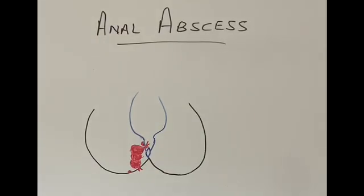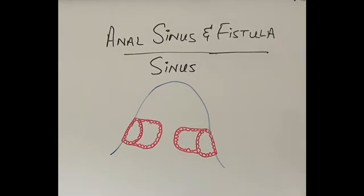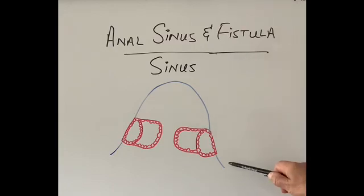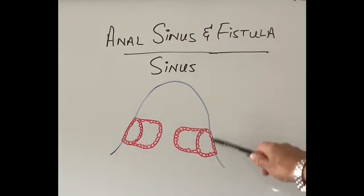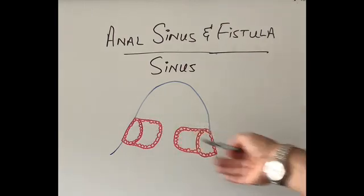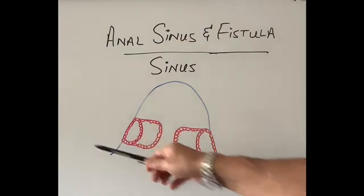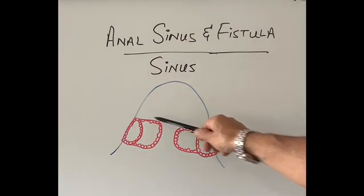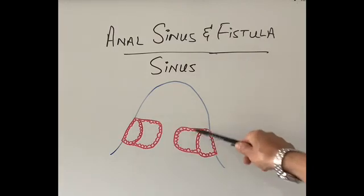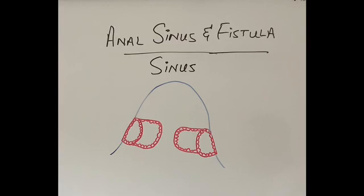This brings us to the second topic: the anal sinus, and the third: the anal fistula. Before discussing them, let's explain what a sinus means and how it differs from a fistula. I've drawn a little hill like a mountain, and I'm trying to dig a tunnel from one side to the other - like going through a tunnel in a train. We have a hole on one side as the entrance and one on the other as the exit. However, at the moment the tunnel is only blind - it's not connected to the other side. So a sinus is a blind-ending tunnel that hasn't connected to the other side.